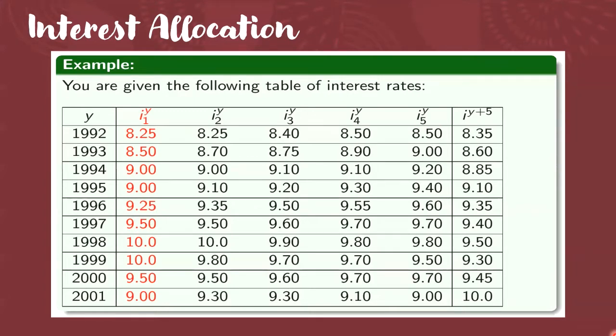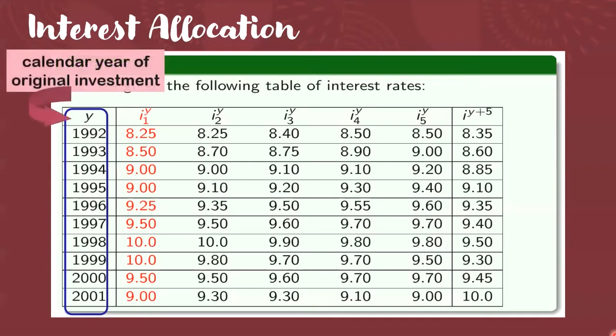Okay, to discuss the two interest allocation methods, we consider the following table. Let me explain the values that you see here. It is the first column. Here are the values of y. Ano yung y? Y is the calendar year of original investment. When you say calendar year, it is from January 1 to December 31.